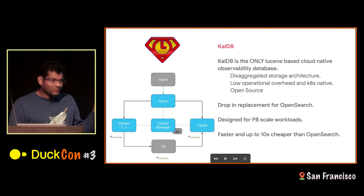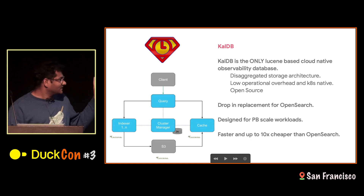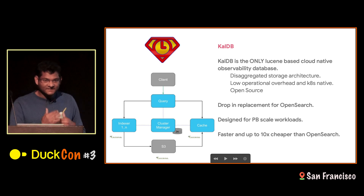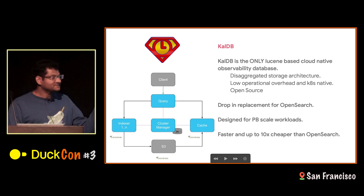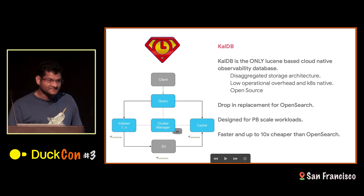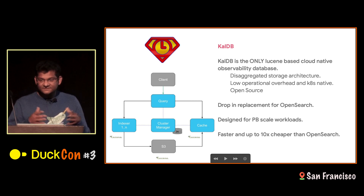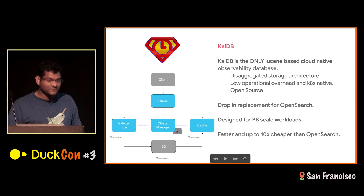At a super high level, how CalDB works: it ingests data from Kafka in the indexer. The indexer indexes the data into a Lucene index and can serve queries on it. Periodically, it snapshots those Lucene indexes to a deep store like S3. There is a cache layer which downloads the snapshots and then serves queries against that. There is a query layer which gets client queries, runs scatter-gather aggregation across the indexer and cache nodes, and returns responses to the user.